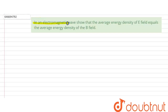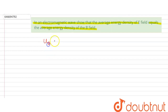The question is: in an electromagnetic wave, show that the average energy density of the E field equals the average energy density of the B field. We will have to prove that the energy density of the magnetic field is equal to the energy density of the electric field.